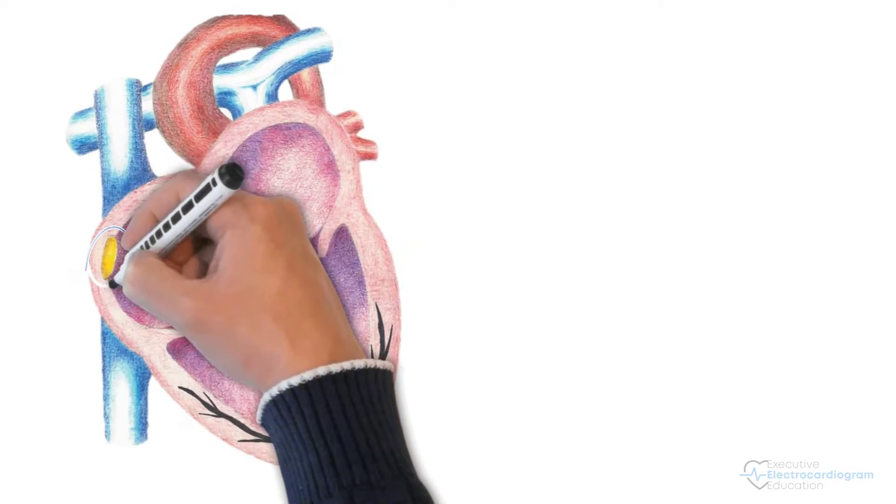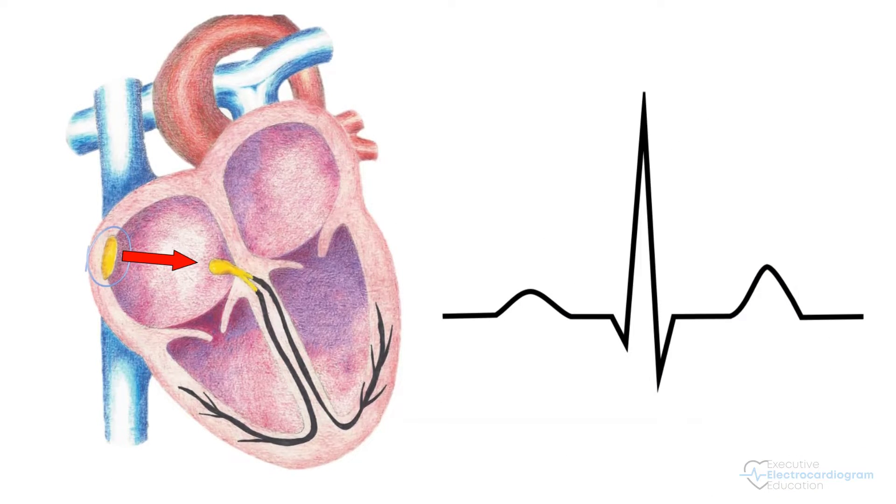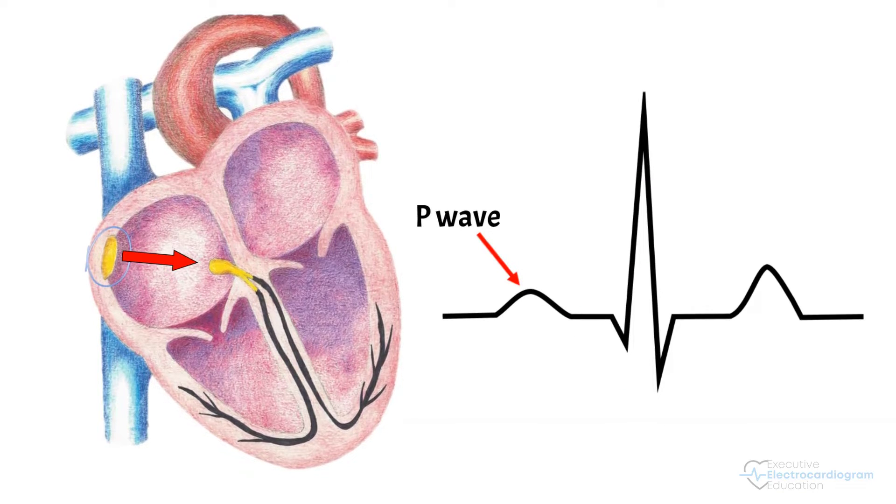Let's remember the conduction starts from the sinoatrial node up here. A little impulse is sent into the atria causing atrial depolarization and a P wave on the electrocardiogram.